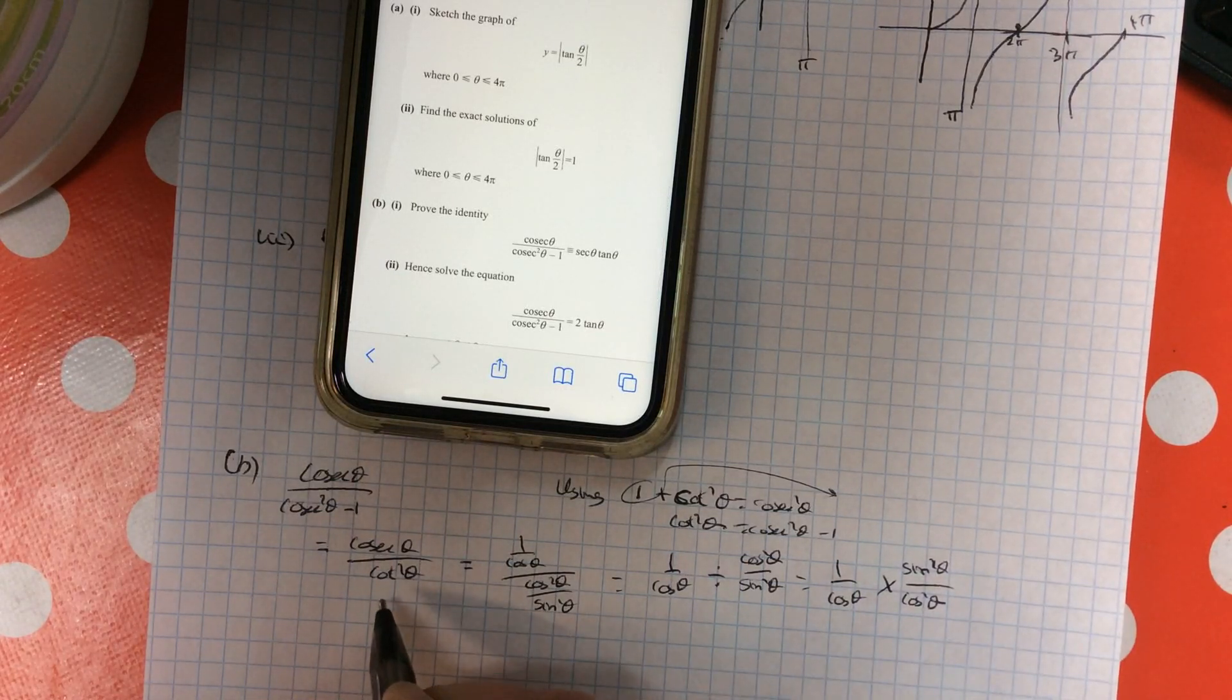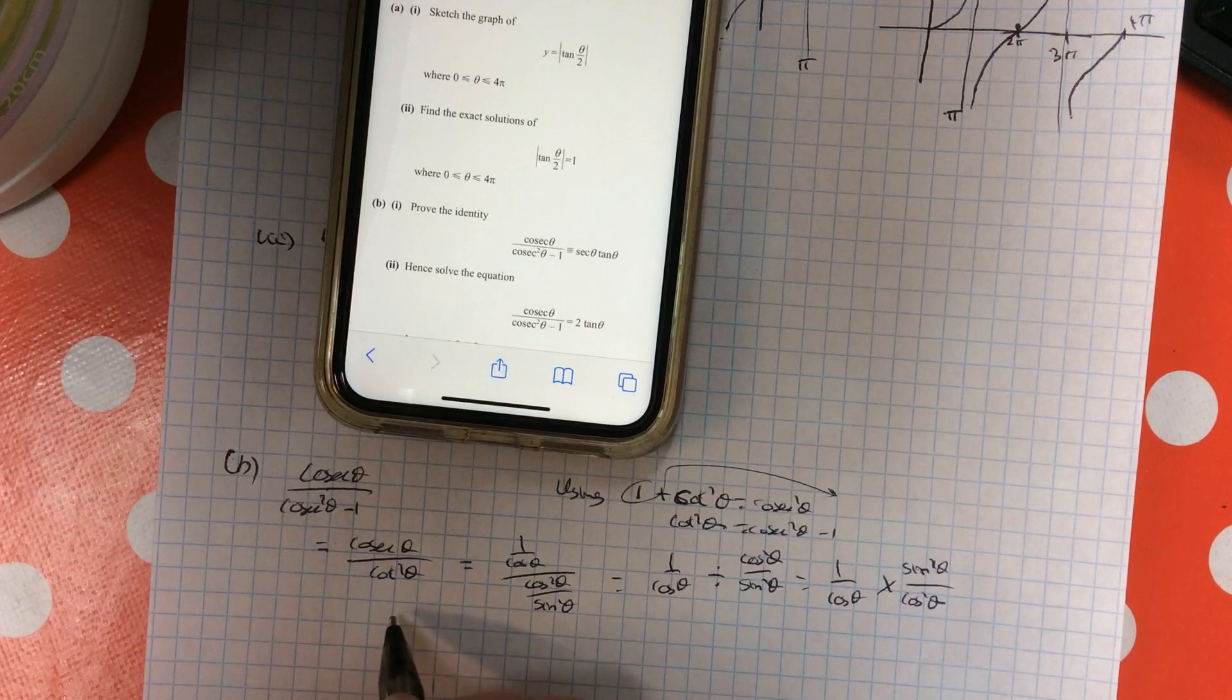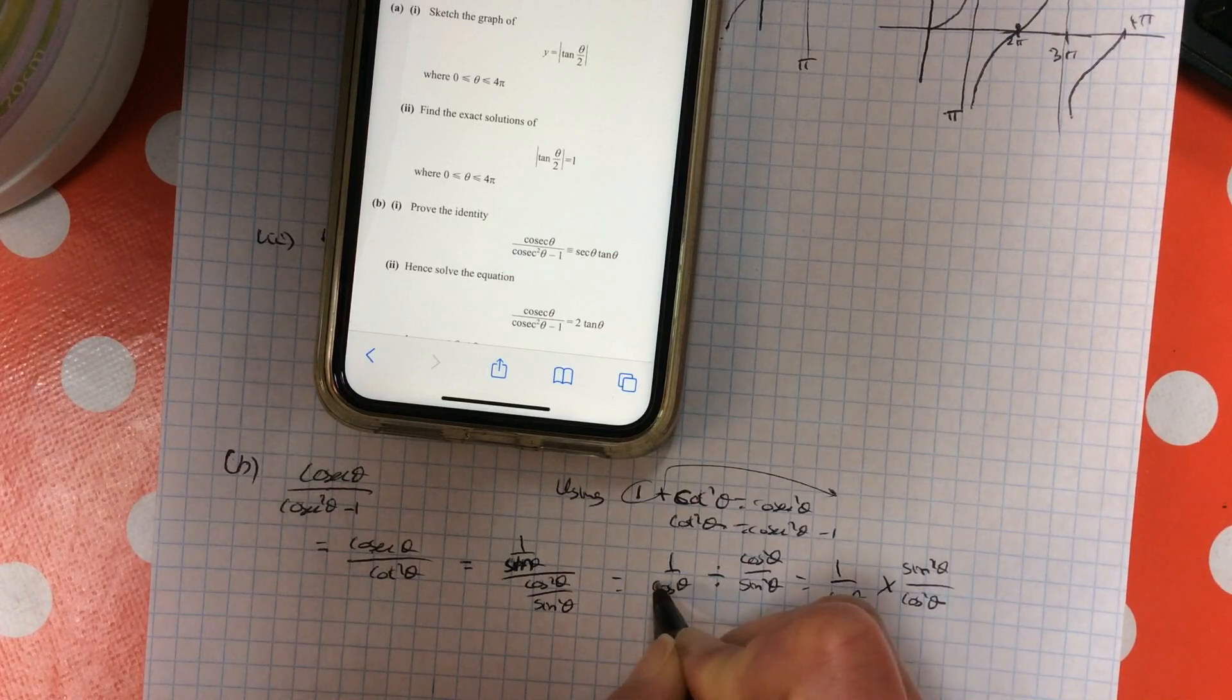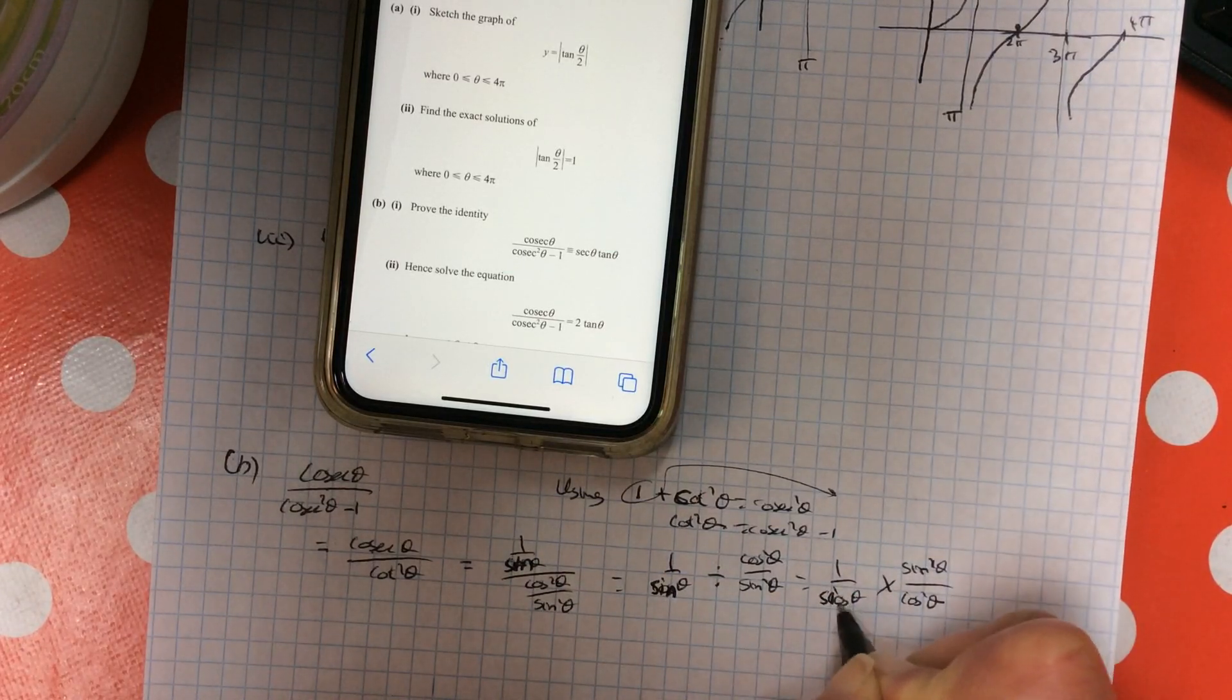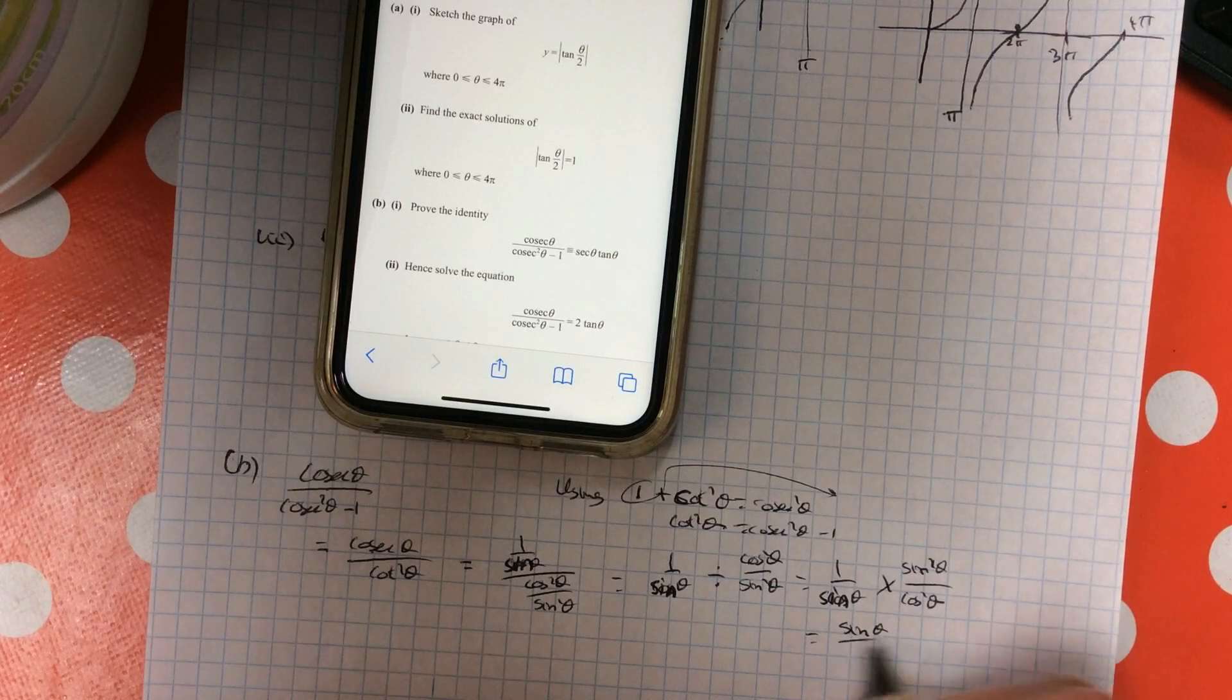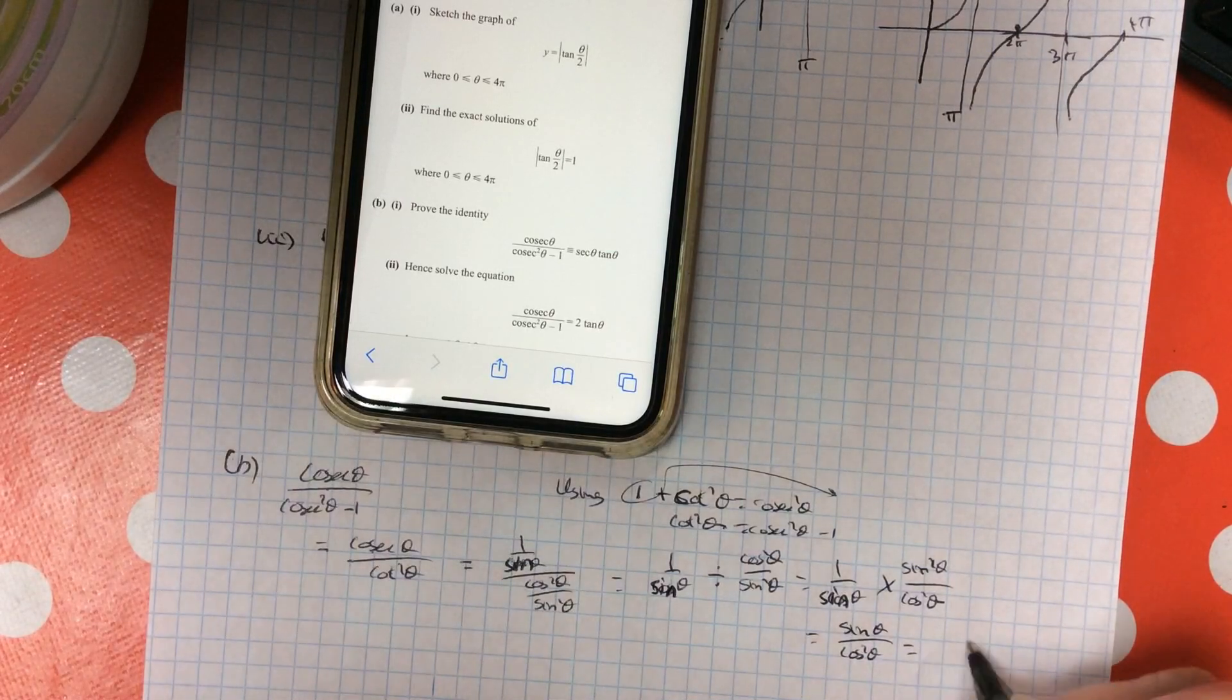And so I just noticed here, sin. The reason I realized there was a mistake there was nothing was canceling. So now that's a lot better. Sin squared over sin cancel, giving me a sin on top and a cos squared on the bottom.